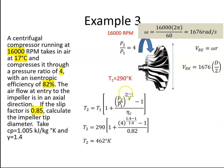gamma is 1.4 from here, and the efficiency is 82%, I get an outlet temperature from the compressor of 462 degrees Kelvin.